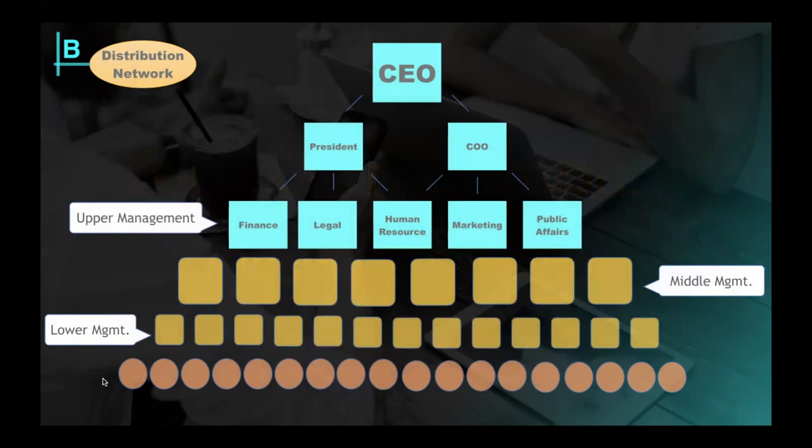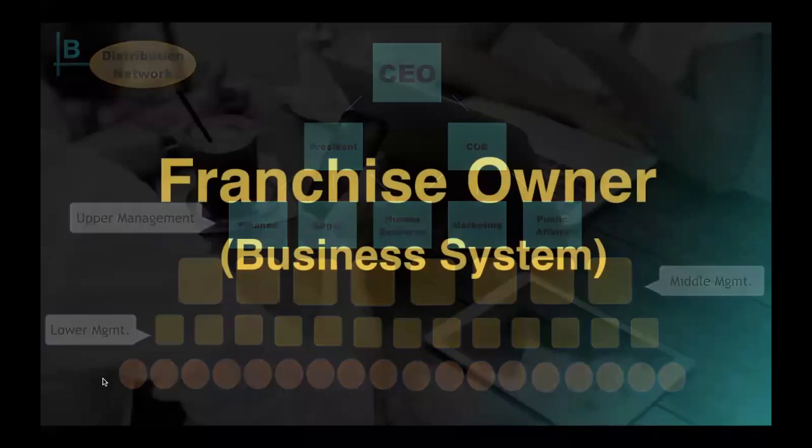Underneath middle management are even more employees working in this network to distribute a product or service. We call them lower management. At the bottom are the customers, the people at the end of the chain who purchase the product or service in the distribution network. In the example we were using with Amazon, the customers at the bottom of the distribution network are purchasing books. And of course, nowadays, because Amazon's expanded, there's much more they're distributing through their network. So this is a standard example of how you can build a distribution network and what the structure looks like if you're building your own company. The challenge, it takes an incredible amount of time, energy, and resources. While a lot of people have successfully done it, it's out of reach of most people because of the challenge that it has.